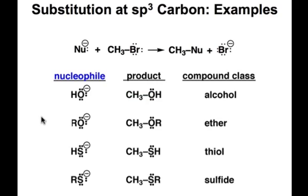In the next example, we're replacing the hydrogen in hydroxide with an alkyl group R, like a methyl group. We call this an alkoxide nucleophile, and we make the ether functional group upon doing the substitution reaction.